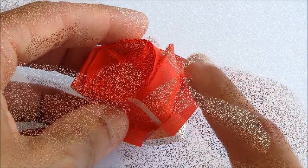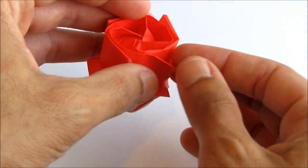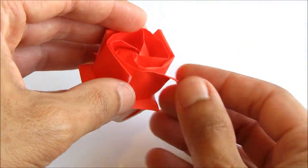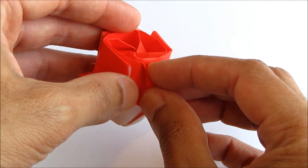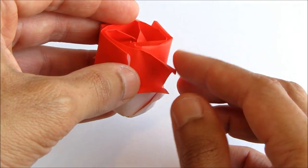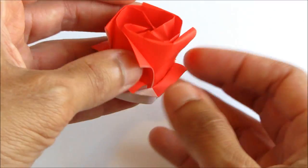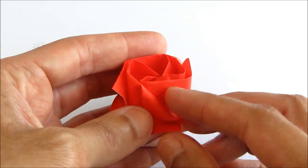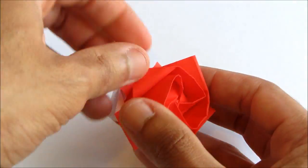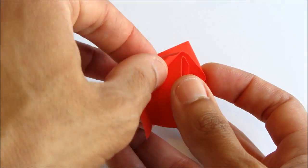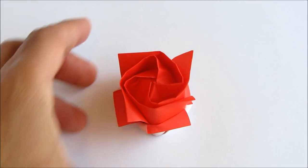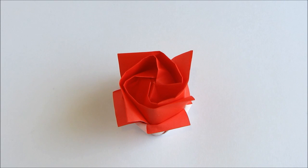Now we'll do the upper petals. So again four. Curl them over with your fingers. You can use a bamboo skewer or something like that to help you. And once that's done, you're done. There you have it. Your completed Origami Kawasaki Rose version 2.